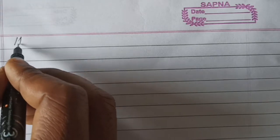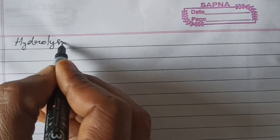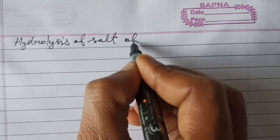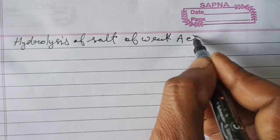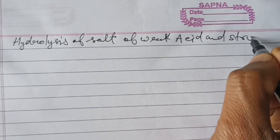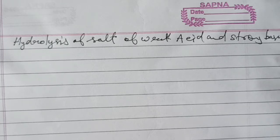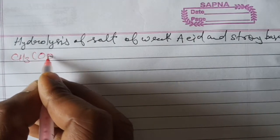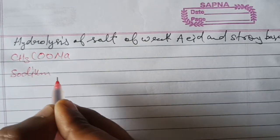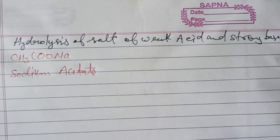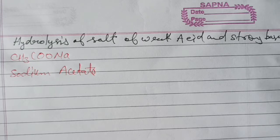In this video we will discuss the next point: hydrolysis of salt of weak acid and strong base. An example of this is CH3COONa, sodium acetate. This is an example of a salt which is made up of weak acid and strong base.